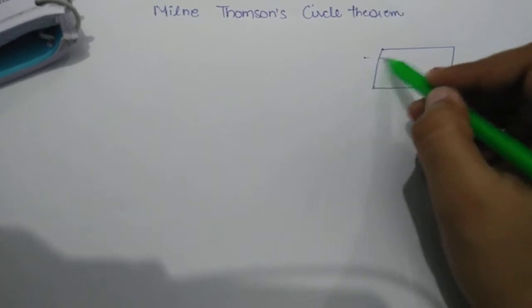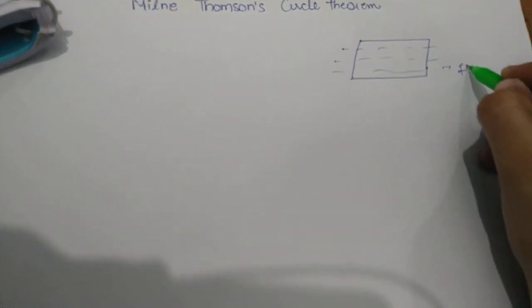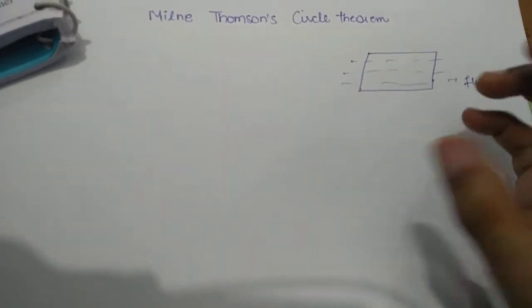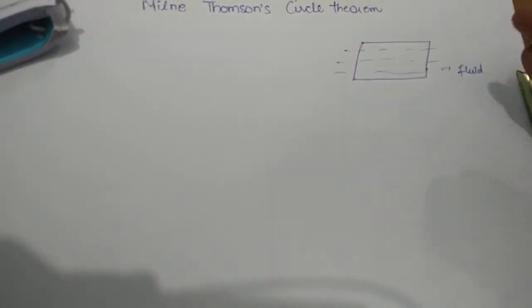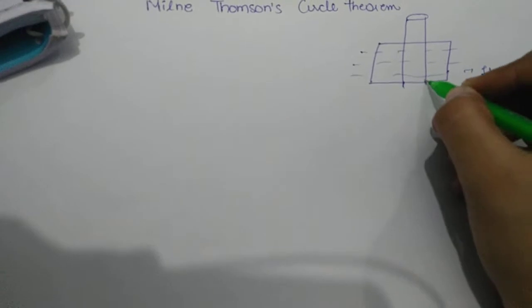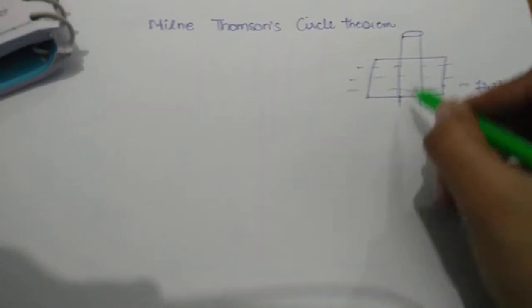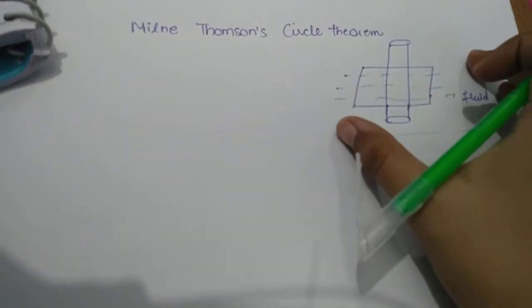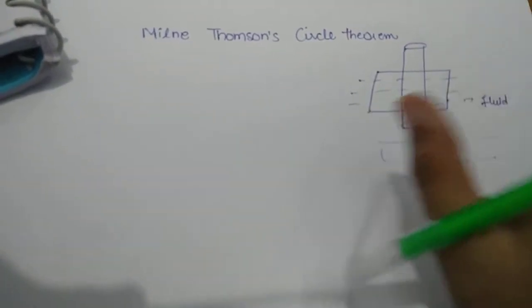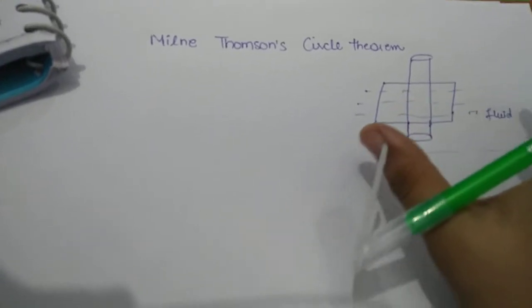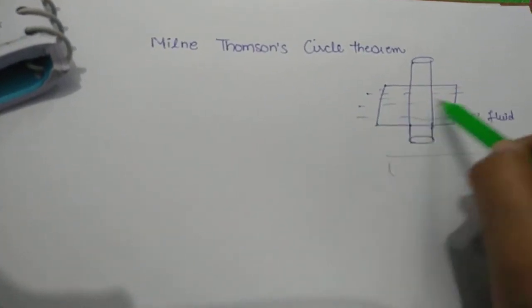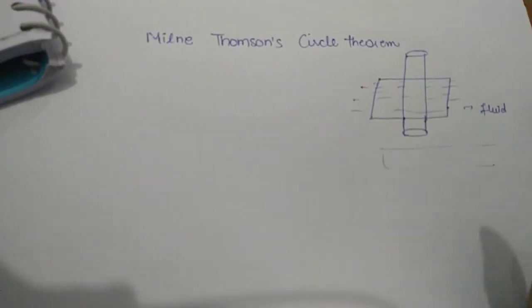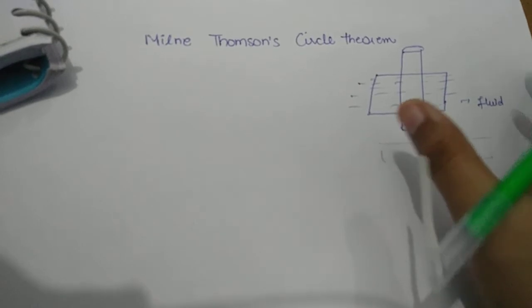If we have a plane — suppose this is your plane and here is a flow, this is your fluid flowing. In that case, if we introduce a cylinder of infinite length into our flow, the cylinder is introduced perpendicular to the plane. Then we study how the velocity potential of the fluid changes.